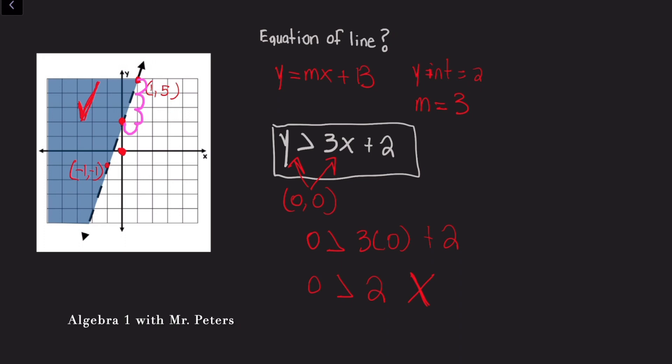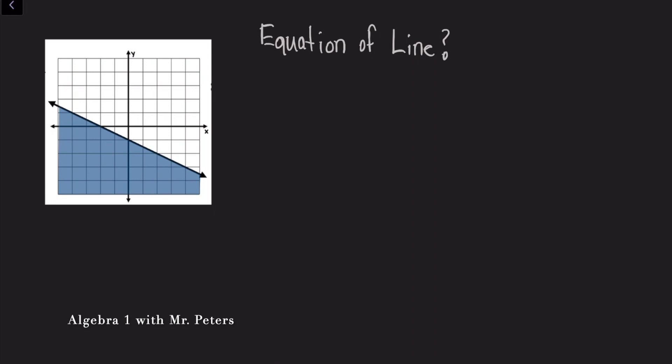But problem number 2 is going to be a tad bit different compared to the first problem. So as we're looking at problem number 2, we have to notice two things. One, this line is slanting downwards. So this lets me know that I'm more than likely going to have a negative slope. And number 2, we have a solid line. So my sign is either going to be greater than or equal to or less than or equal to. So let's go through and solve. So we know that the y-intercept, negative 1, when we pick another point on the graph, I'm going to get a rise over run of negative 1 over 2. So my slope, negative 1 over 2.